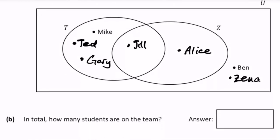So in total how many students are there on the team? Well we just count them up. There's Mike, Ted, Gary, that's three. Jill, Alice, Ben and Zena. It's a total of seven.